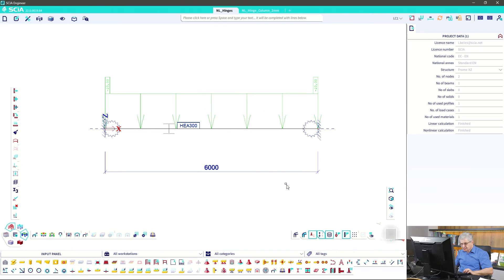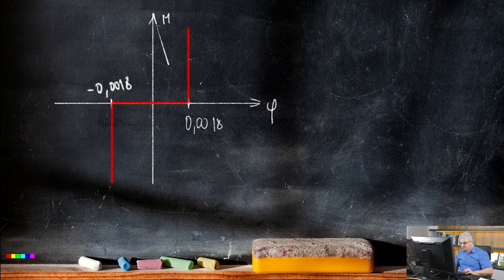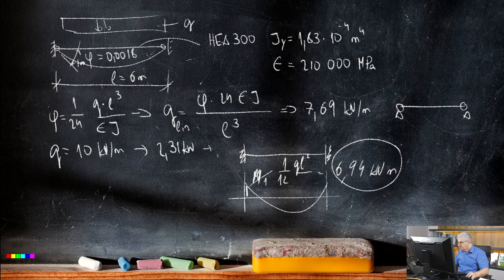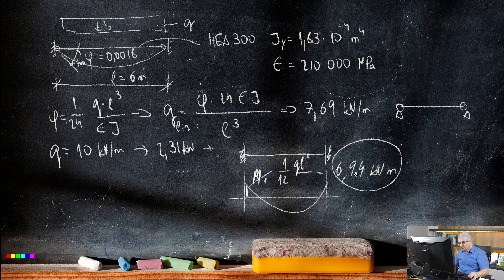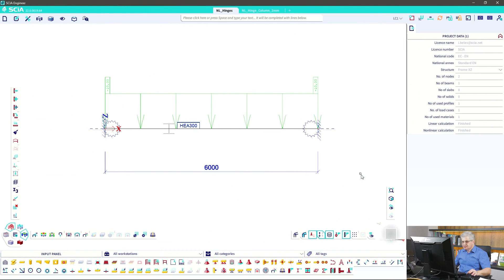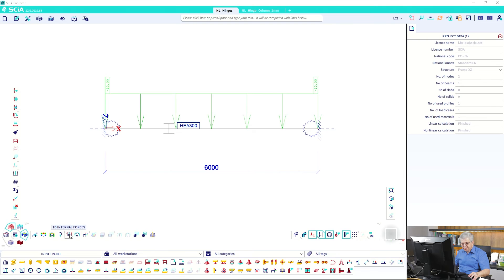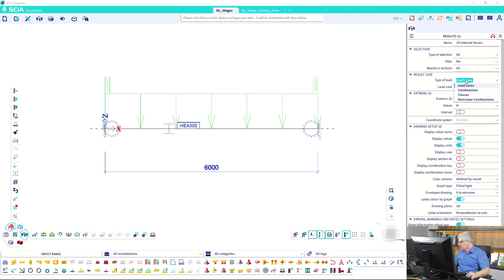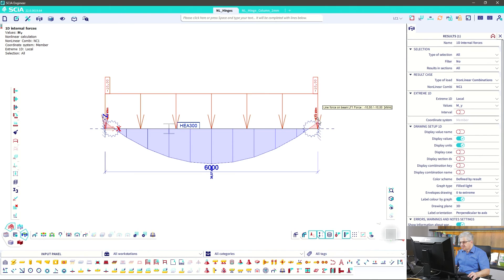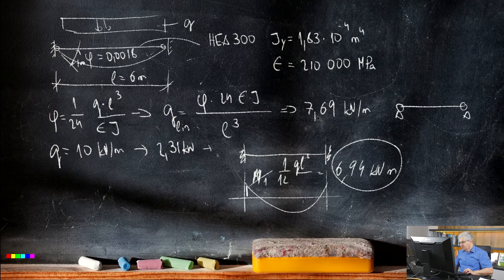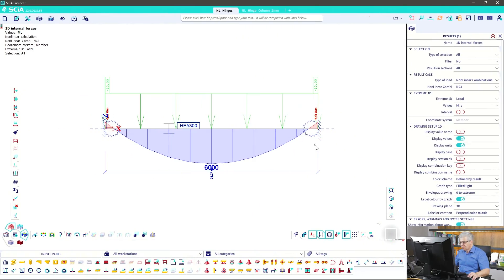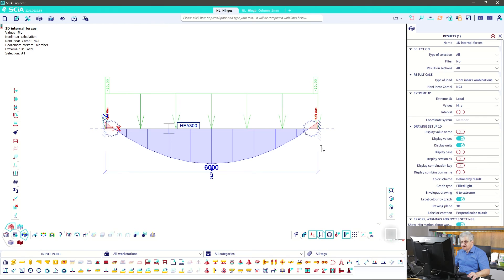Okay, then we have the results and we should get 6.94 kNm bending moment in the support. Let's check the internal forces from nonlinear combination and we will look at the bending moment. I want to see the local extreme values - F5, 6.93 and we should get 6.94. Okay, small difference.